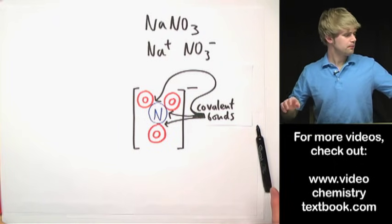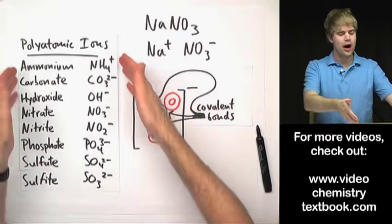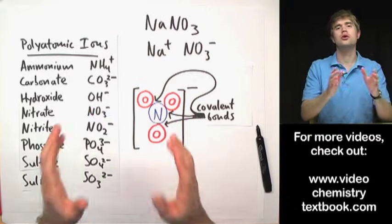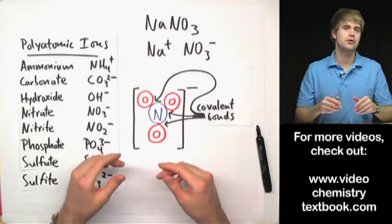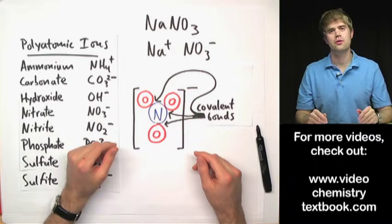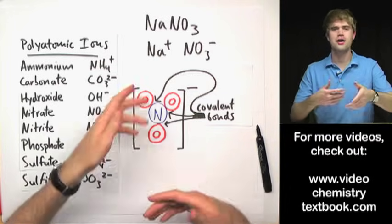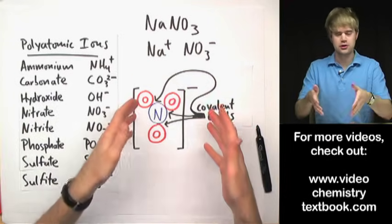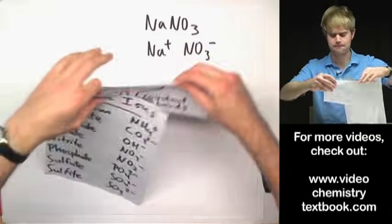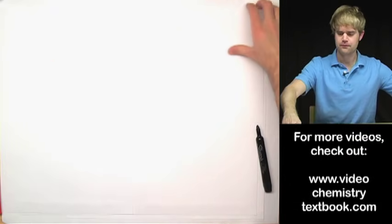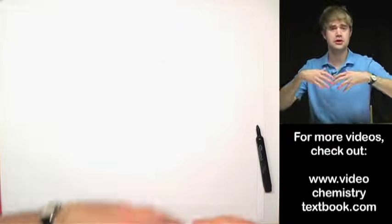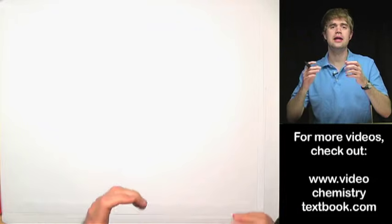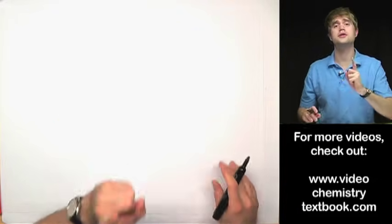Now I want to address another question: I want to explain why polyatomic ions have a charge. This has to do with covalent bonding, Lewis structures, electron dot diagrams, and similar things — valence electrons for example. If you don't already know about these, no big deal — you can turn the video off and watch it later. But if you have a background in this, you might be interested in how these clumps of atoms actually get a charge. It's all about covalent bonding holding the atoms together in these polyatomic clumps.